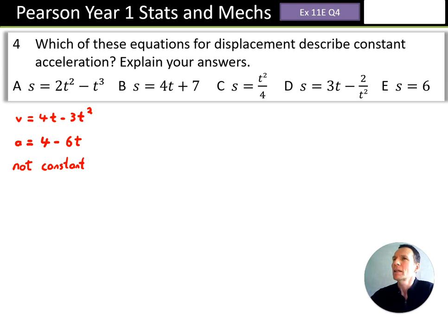Part B, if we differentiate to get the velocity, we get 4. And differentiate again to get the acceleration, we get nothing. So that's got no acceleration.